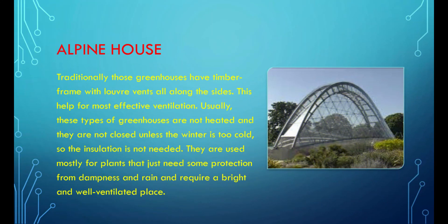Alpine houses traditionally have a timber frame with louver vents all along the sides, which helps with most effective ventilation. Usually these greenhouses are not heated and are not closed unless the winter is too cold, so insulation is not needed. They are used mostly for plants that just need some protection from dampness and rain and require a bright, well-ventilated place.